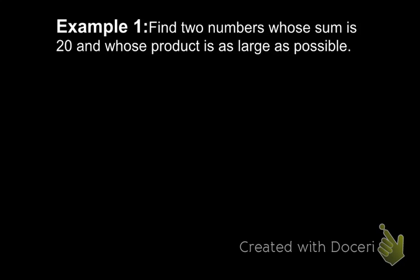Two numbers whose sum is 20 and whose product is as large as possible. The way that I approach this first is I know I'm going to have two numbers, A and B. We've got two numbers, and I know that their sum has to be 20. Fair enough. A plus B equals 20.